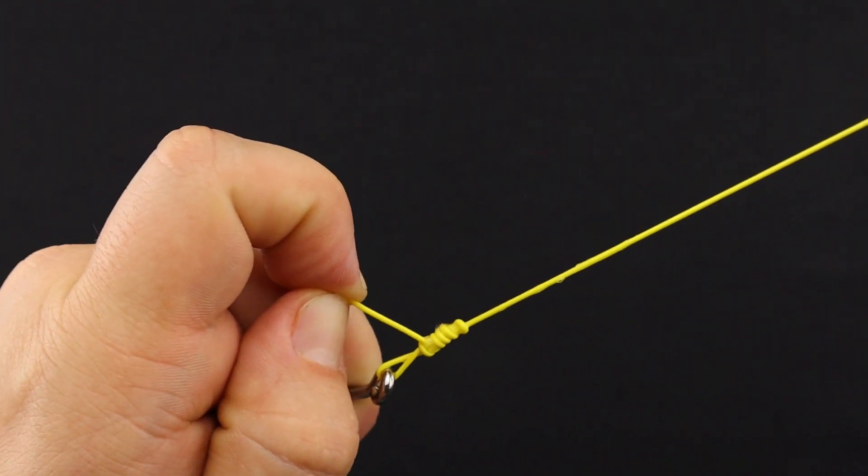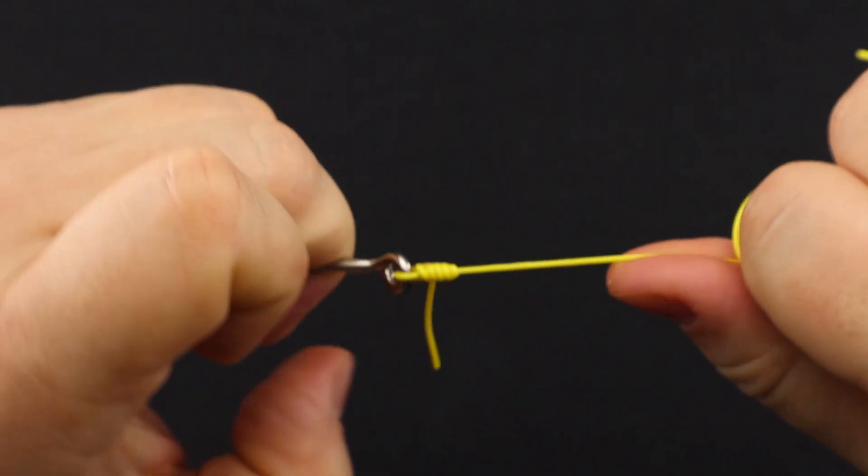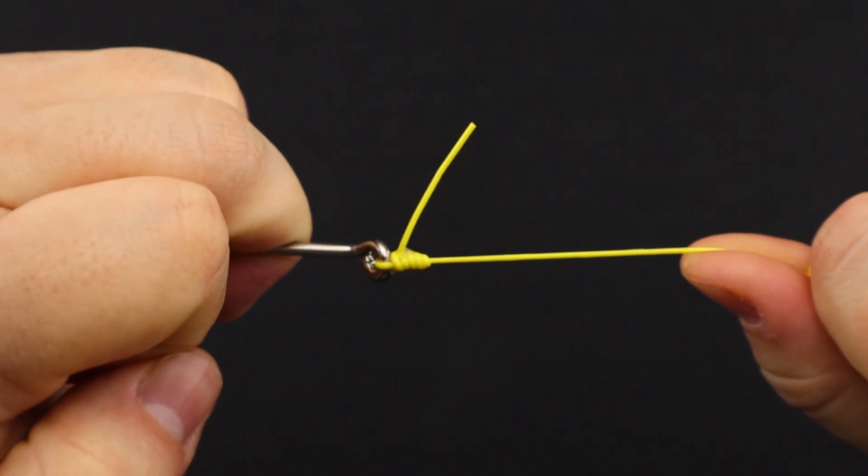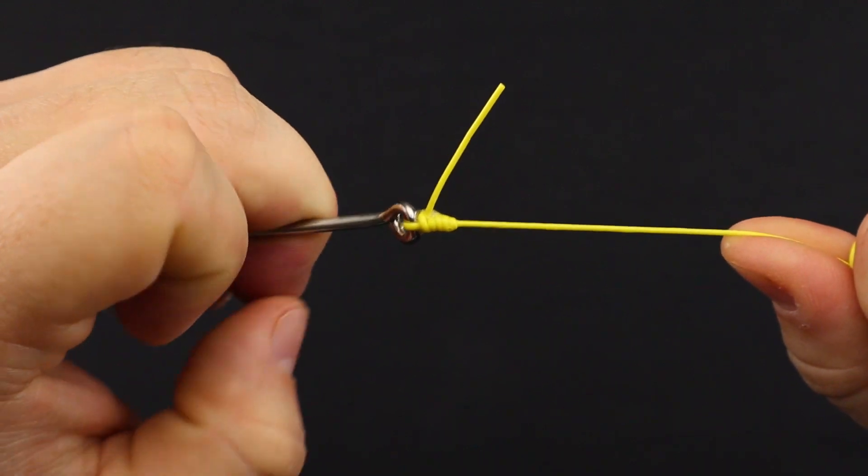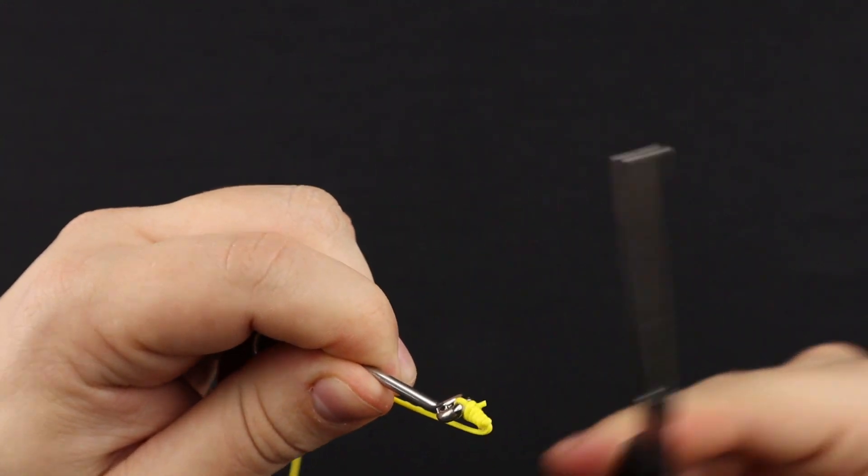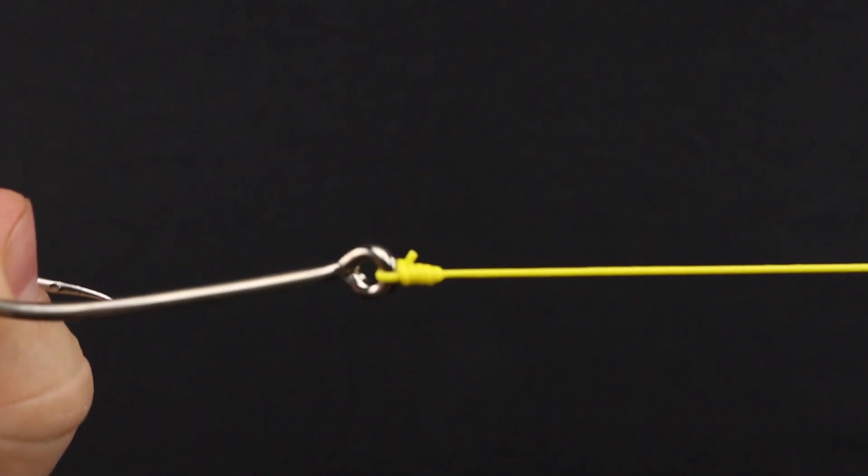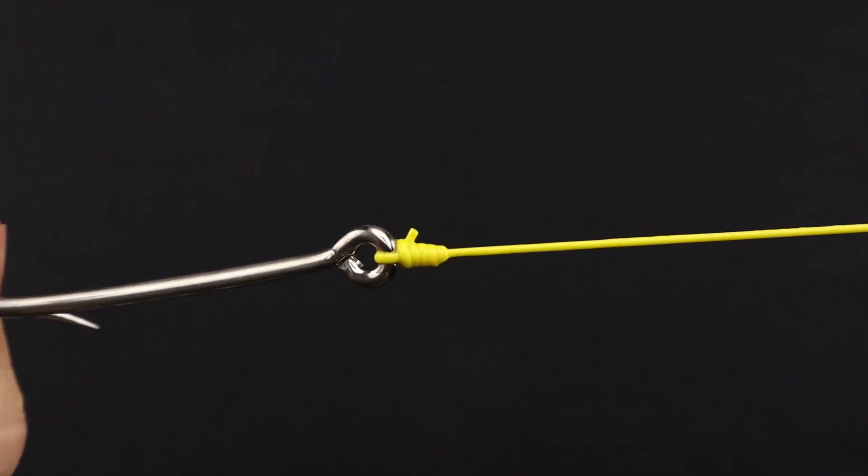Then now give it a nice pull to fully set that knot. And then what you're left with is a tag end here. Go ahead and cut that off and what you're left with is an improved clinch knot.